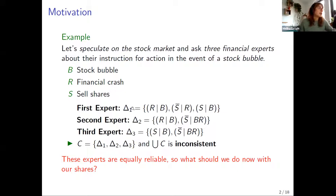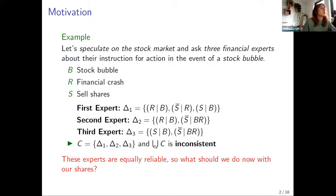We can take all of these conditional belief bases, denoted as delta 1 to delta 3, and write them in a set of conditional belief bases C, which we call a conditional profile. The conditionals within C are all together an inconsistent set of conditionals, which we denote as the union of C — a notion we call the union profile. All you know is that these experts are equally reliable. So what should we do with our shares in the case of a stock bubble?